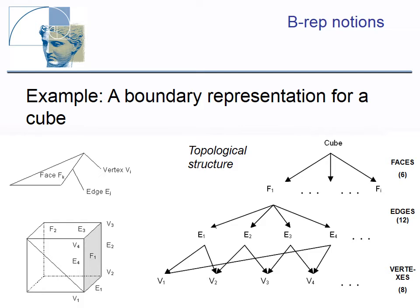This boundary representation has two parts — topological and geometric information. Thus, face F1 is bounded by edges E1 to E4, as is shown in the graph at the right side. Edge E1 is bounded by vertices V1 and V2, and so on.